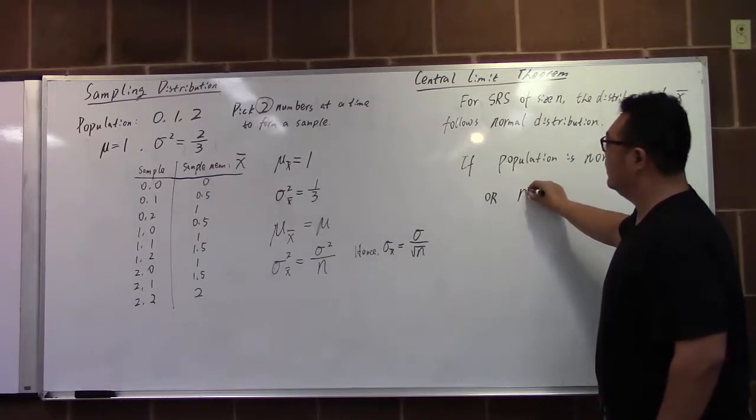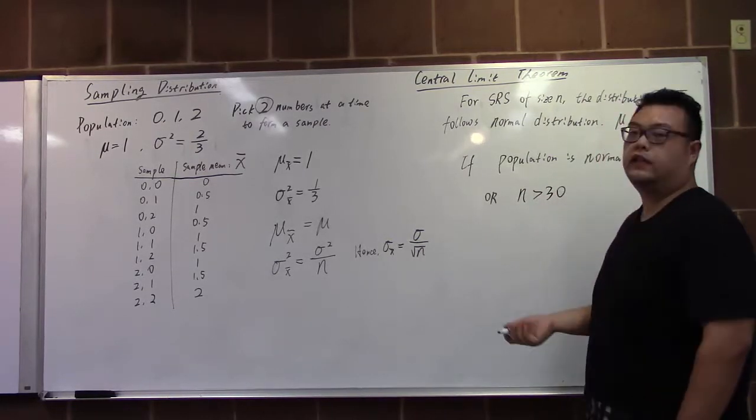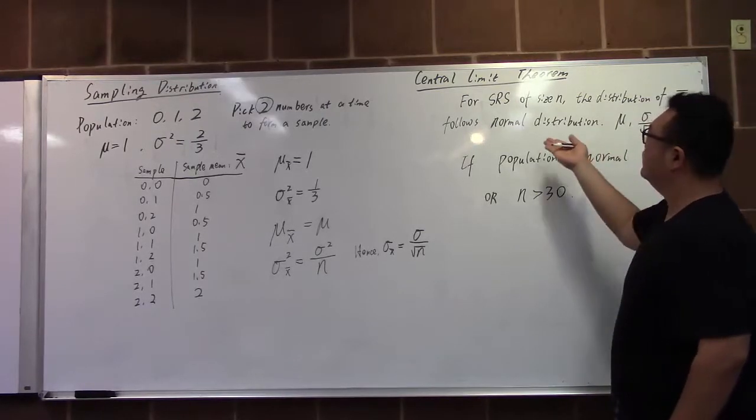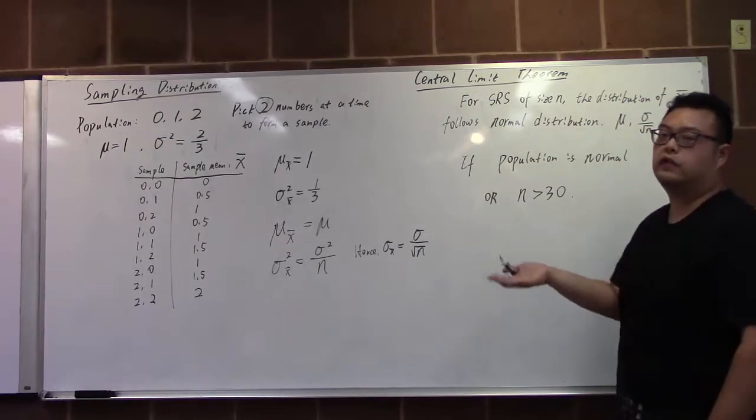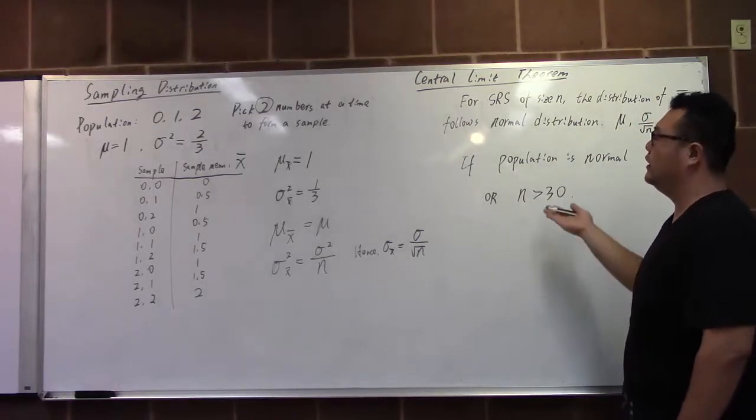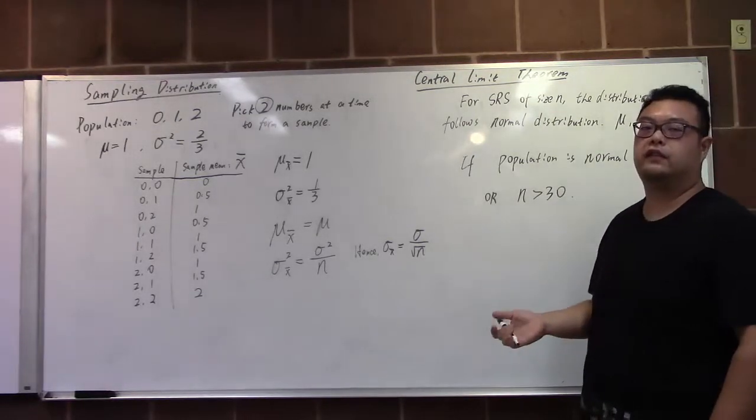Or if we don't know the population is normal but if our sampling distribution has a large enough size, in some textbooks they say size is greater than 30, then the x bar will follow the distribution or can be approximated to the normal distribution. That is the idea of central limit theorem.